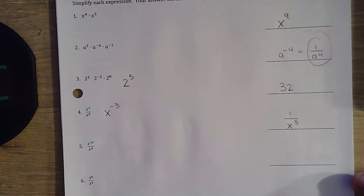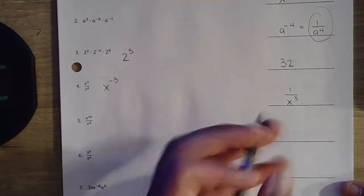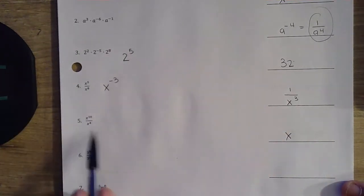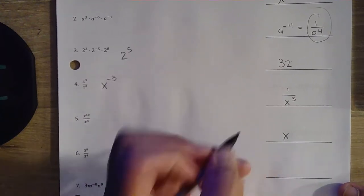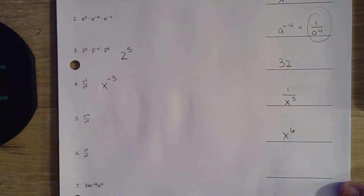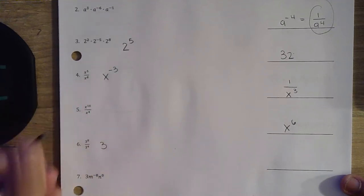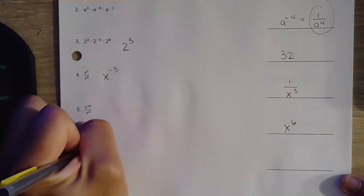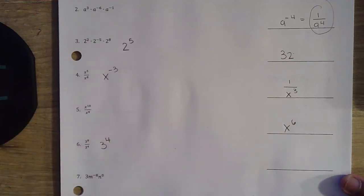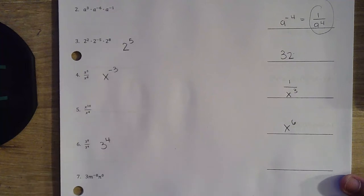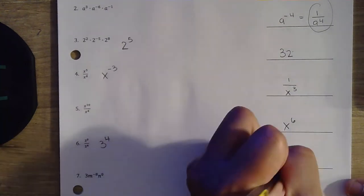Question number 5, we have the same base of x. We need to figure out what the exponent is going to be. 10 minus 4 gives us x to the 6th power. Question number 6, same thing — same base of 3. 8 minus 4 gives us 3 to the 4th power. Anytime we have an actual number, we can figure that out: 3 times 3 times 3 times 3 gives us 81.